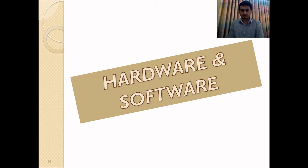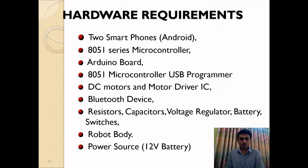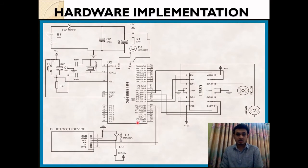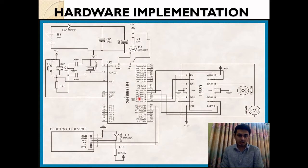For hardware and software, we need two Android phones, an 8051 microcontroller, an Arduino board, a USB programmer, a DC motor, a Bluetooth device, circuit components, a robot body, and a power source. In hardware implementation, the 8051 microcontroller with power source configuration and oscillator configuration are shown. The Bluetooth receiver receives the signal from the transmitter app, and its output is connected to the input of the 8051 microcontroller, which decodes it and passes it to the motor driver IC. There are two motor drivers in that IC to drive the motors.